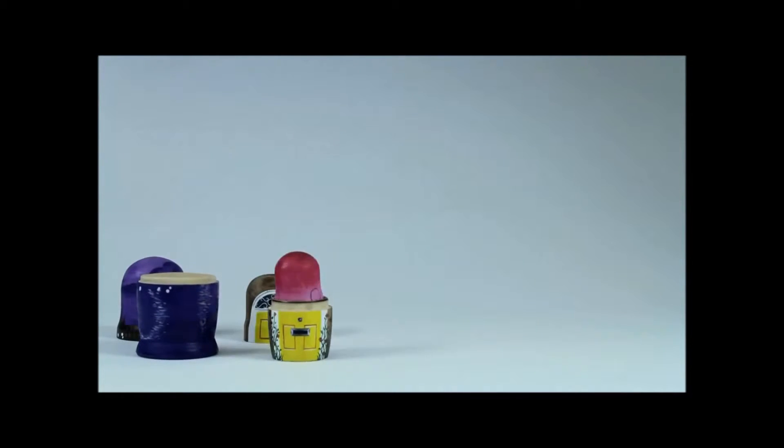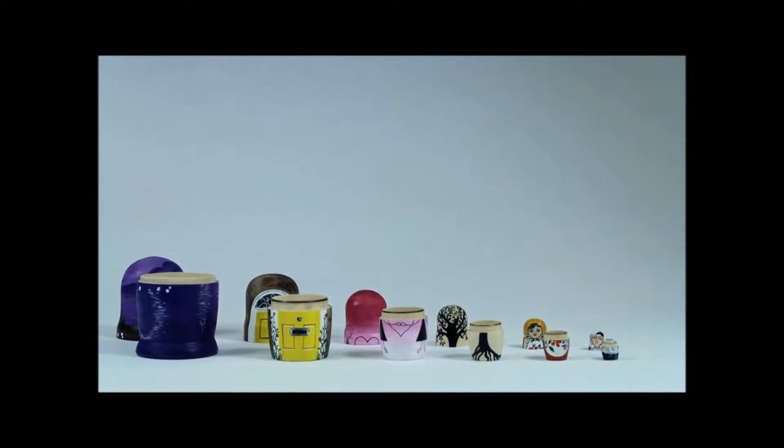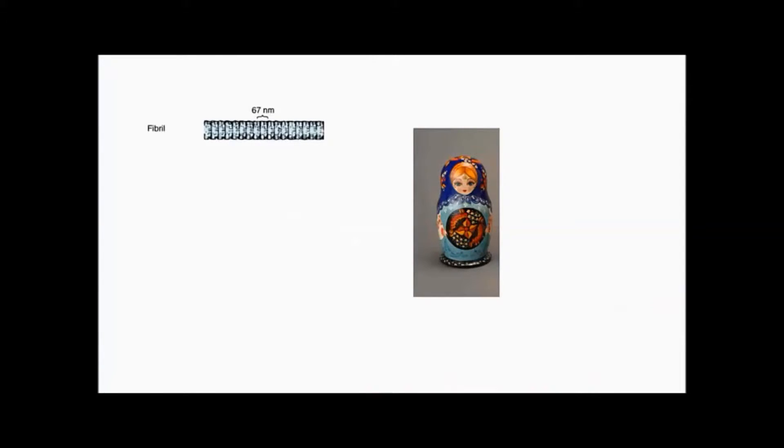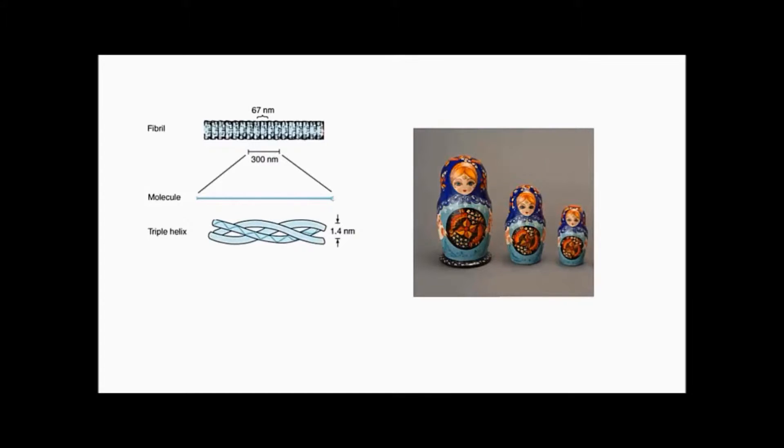Do you know the Matryoshka, which is a Russian doll? The small doll is inside of the large doll. Big collagen fibers are made with a lot of other collagen fibrils. Fibrils are made up of triple helix structures and one triple helix is made of two alpha chains and one other chain. Each of those chains consists of amino acid sequence.